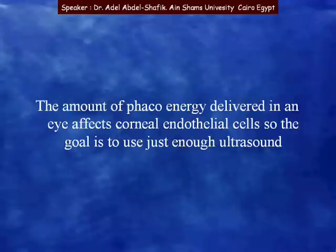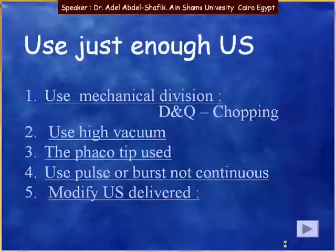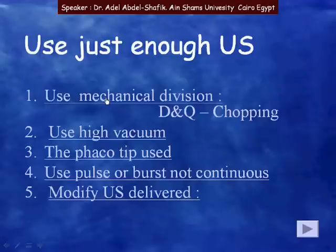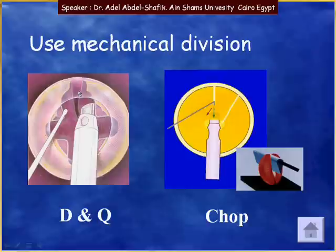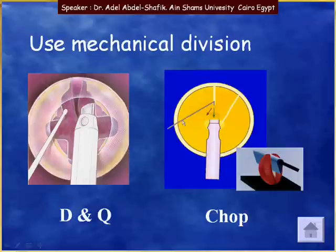The amount of phaco energy delivered in an eye affects the corneal endothelial cells, so the goal is to use just enough ultrasound. To use just enough ultrasound, we can make use of mechanical division like the technique of divide and conquer, where we divide the lens into quadrants, or the technique of chopping, where we divide the lens into small pieces. Chopping is useful in hard nuclei; divide and conquer is useful in less hard nuclei.